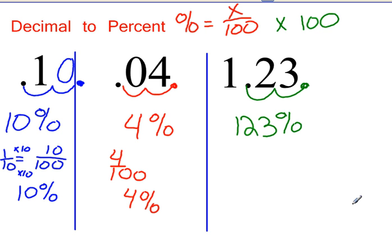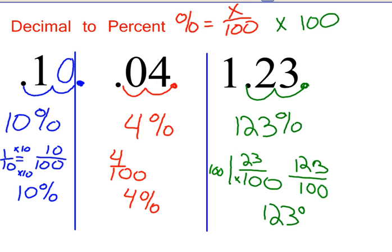And 1 and 23 hundredths as a fraction. It would be a mixed number. 1 and 23 out of 100. Now if you change this mixed number to an improper fraction, 100 times 1 is 100 plus 23 is 123 over 100. 123 over 100 is 123 percent.